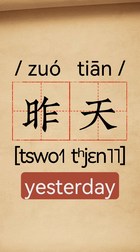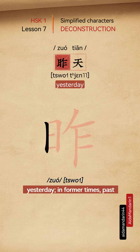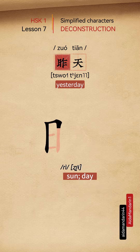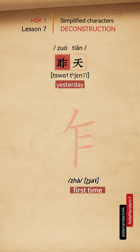昨天, yesterday. 昨 means yesterday, in former times, past. It has a left-right structure and can be deconstructed into two parts. The left part, 日 means sun, day. The right part, 乍 means first time.